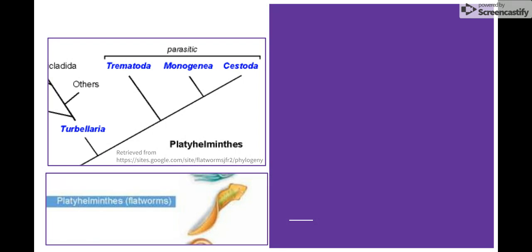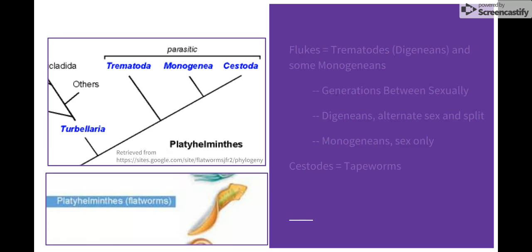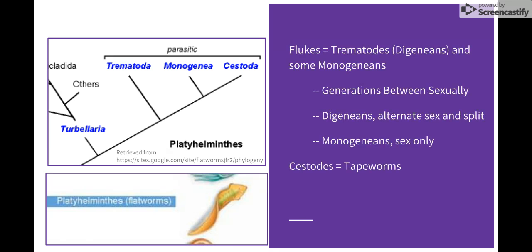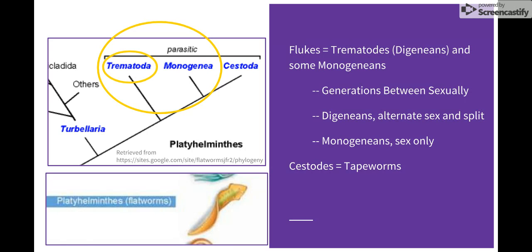Turbularia, which are free-living flatworms, and they are not parasitic. However, the trematoda, which is also dianogenes or the monogenes, they both have flukes in them. The di versus the mono is just a reference to the generations between sexual reproduction. Dianogenes alternate from having sex to splitting between generations, while monogenes have sex every generation. Cestodes are tapeworms, which are parasitic, and will be covered under the tapeworms section. We will be focusing on the dianogenes and the monogenes, and most specifically on the dianogenes of the trematodes, which is a fluke.